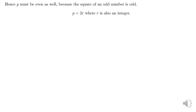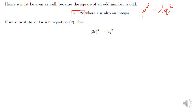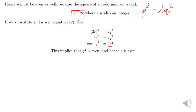Since P is even, P is a multiple of 2, so we can write P equals 2R where R is also an integer. Substituting into equation number 2, which is P² equals 2Q², we replace P with 2R to get (2R)² equals 2Q², which gives 4R² equals 2Q². Dividing both sides by 2, we get Q² equals 2R², meaning Q² is a multiple of 2 — so Q² is an even number.